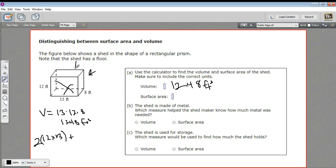The top here and the bottom are the same, and they're 13 by 8. So we'll have two times 13 by 8. And then the two ends here, they're 8 by 12. So we'll have to add that to two times 8 by 12.